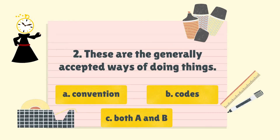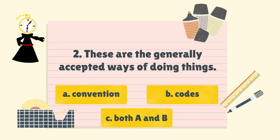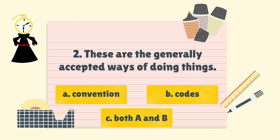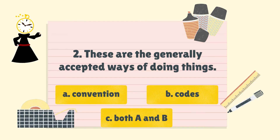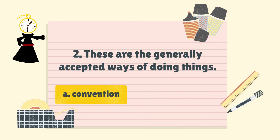Number two: these are the generally accepted ways of doing things. A. Convention. B. Codes. C. Both A and B. The answer is A. Convention.